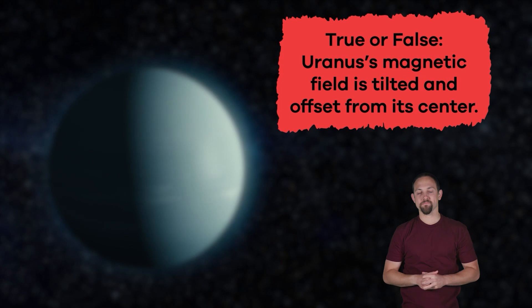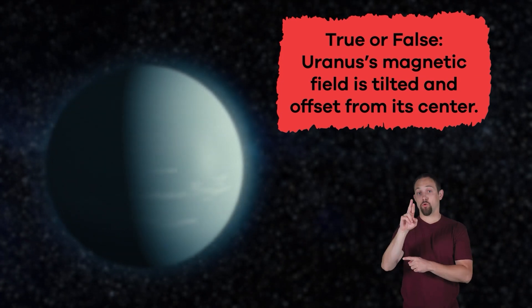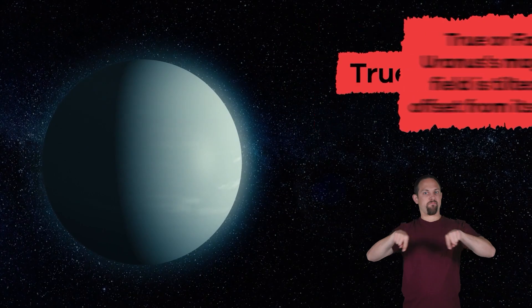True or false, Uranus' magnetic field is tilted and offset from its center. True!